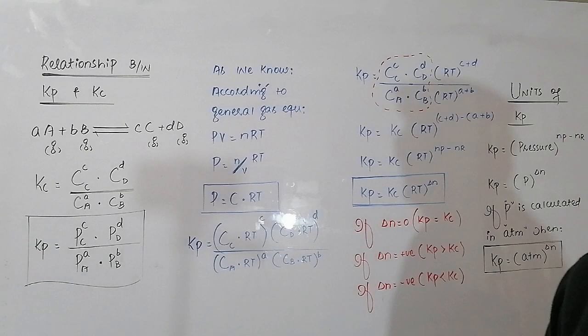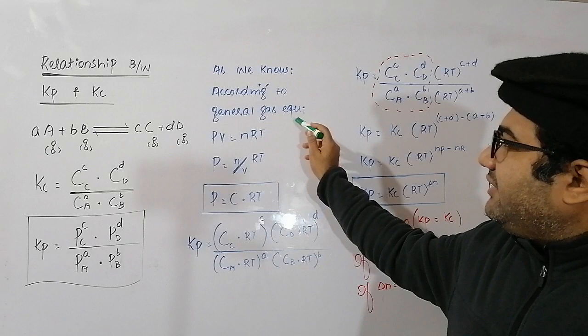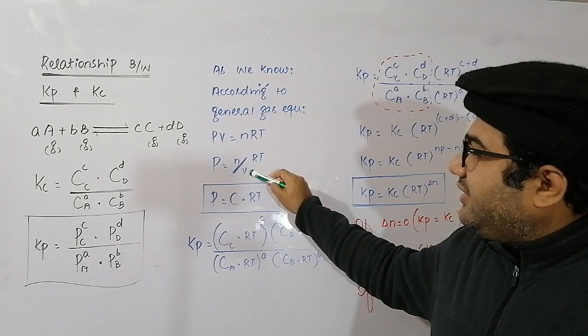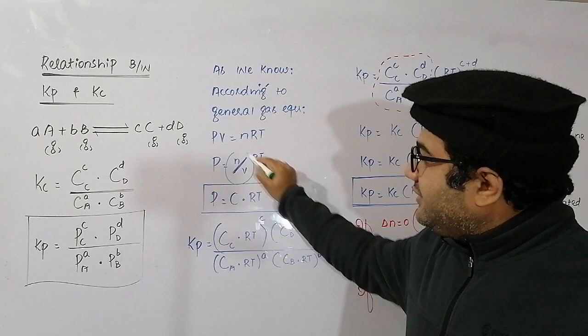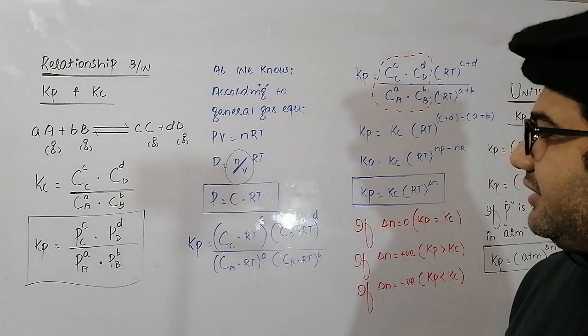In order to derive a relation between Kp and Kc, according to the general gas equation PV = nRT. Dividing both sides by V gives P = (n/V)RT. The ratio n/V is the molar concentration, represented by the symbol C. So P is equal to C times RT.